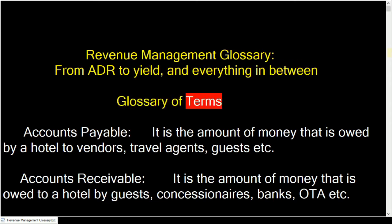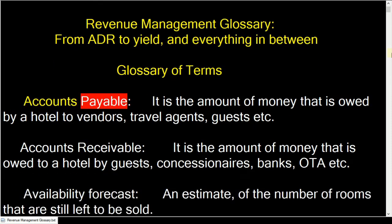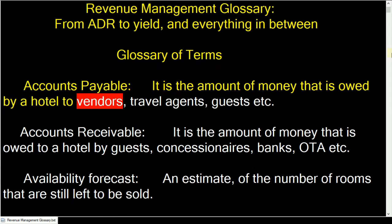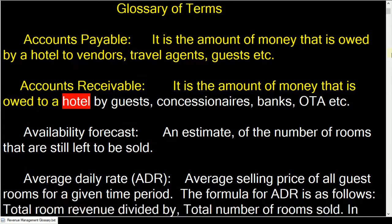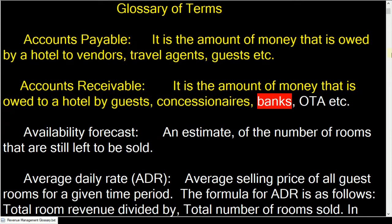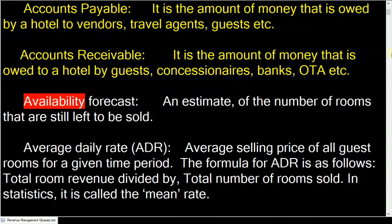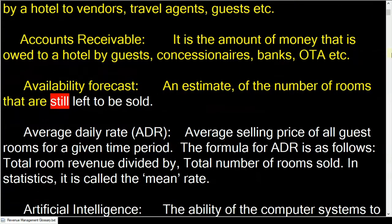Accounts payable is the amount of money owed by a hotel to vendors, travel agents, guests, concessionaires, banks, ODA, etc. Accounts receivable is the amount of money owed to a hotel by guests. Availability forecast is an estimate of the number of rooms that are still left to be sold.